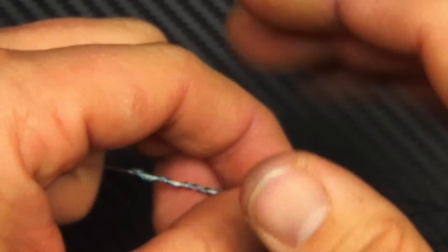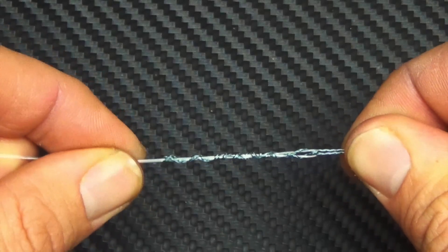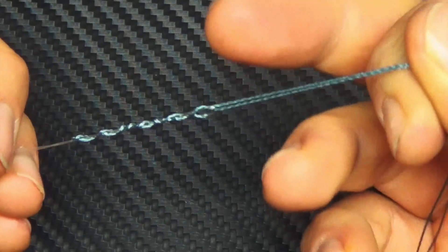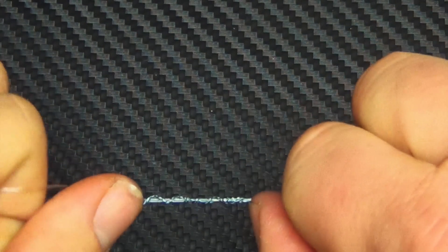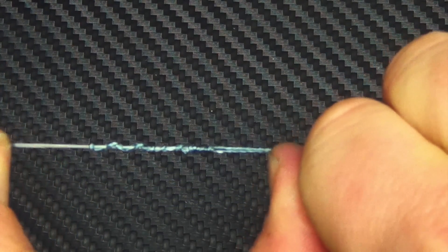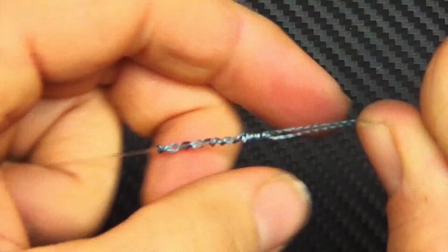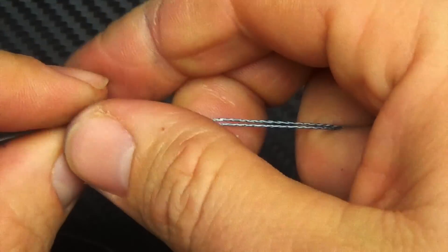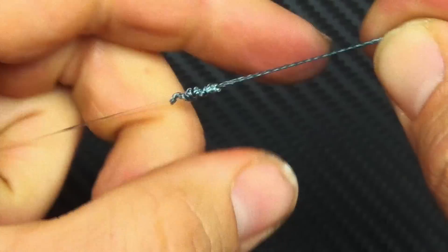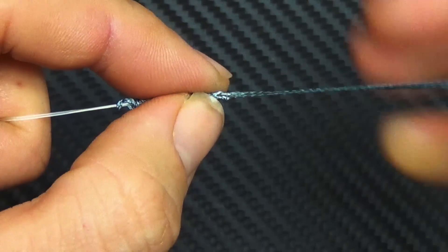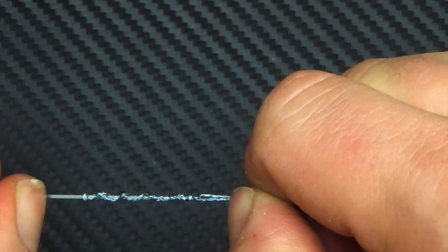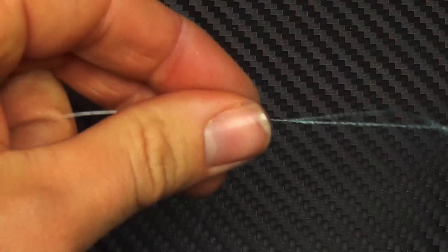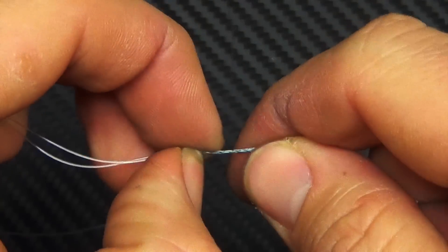The cool thing about this knot is the harder you pull, the more you pull, the tighter the knot becomes. It's kind of like a Chinese finger trap almost. So just pull everything down. And it helps if you kind of work it with your fingers a little bit just to make sure everything's even and uniform.